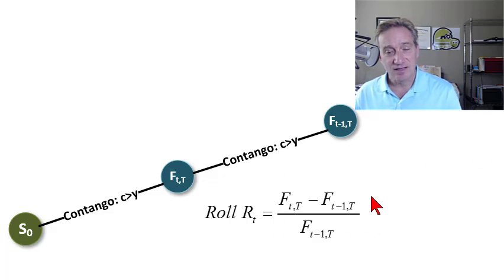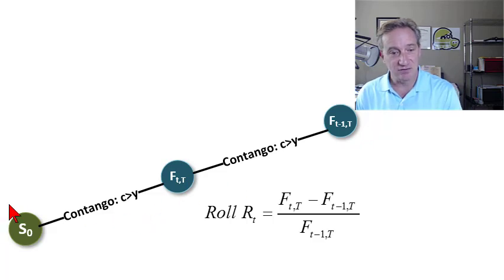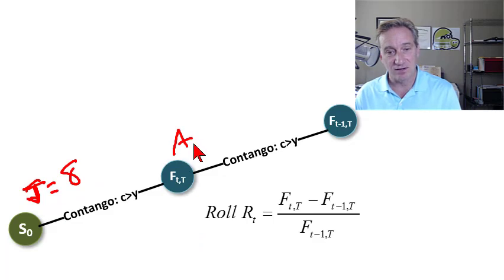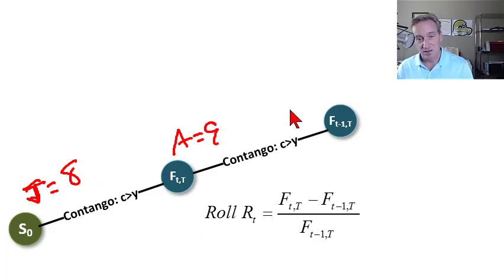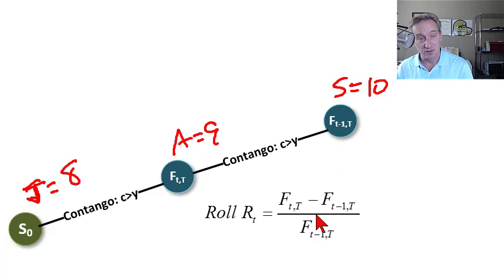The other key feature is the roll return. Going back to the contango, now showing two futures prices: let's say we're in July — the July spot price is $8, an August futures contract is $9, and a September futures contract is $10. That upward sloping curve is a contango, and in contango the roll return or roll yield is negative.